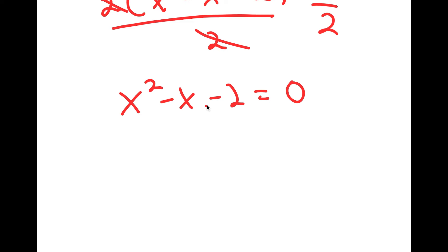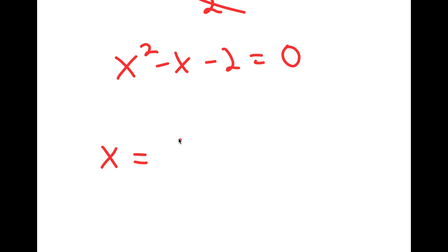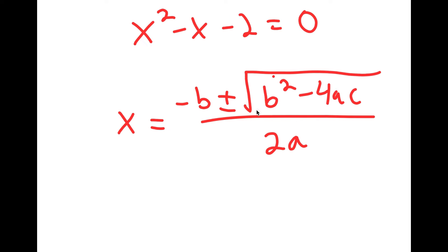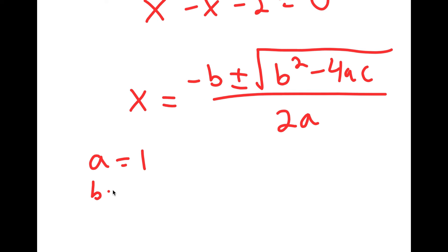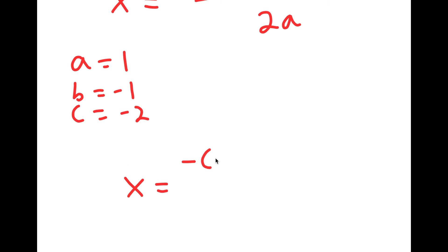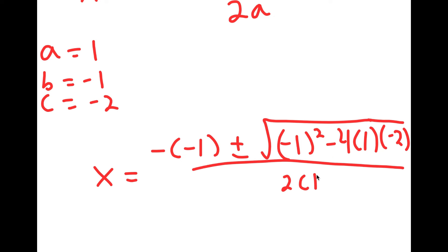Because this is a quadratic equation, I'm going to use the quadratic formula: negative b plus or minus the square root of b squared minus 4ac, all over 2a. In this case, a is 1, b is negative 1, and c is negative 2. So I get x is equal to negative of negative 1, plus or minus the square root of negative 1 squared minus 4 times 1 times negative 2, all over 2 times 1.